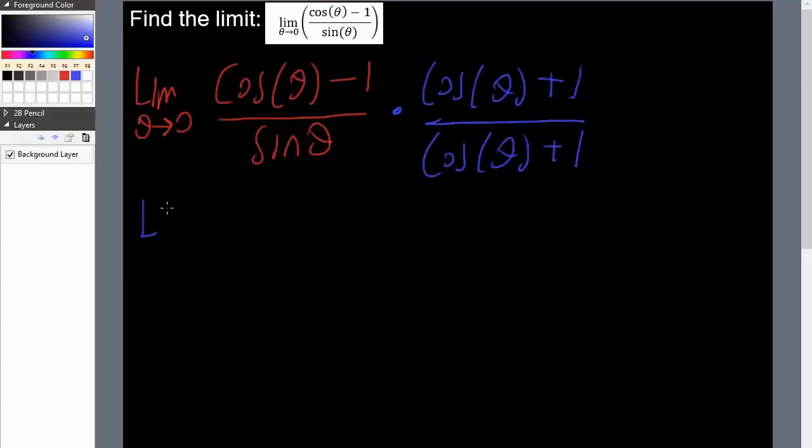But now by doing this, we can get limit theta is going to approach 0. We'll have cosine theta times cosine theta is cosine squared theta. This times this is 0. And we'll just be left off with minus 1 divided by cosine theta plus 1.